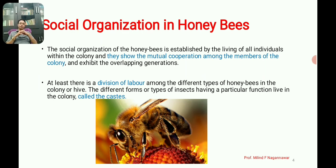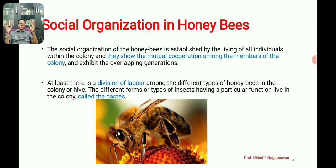In the colony of a honeybee hive, there is a division of labor. All members of the colony are divided into different tasks. There is a group called workers, a group called drones which are meant for reproduction, and one queen who is a fertile female. This division of roles is called division of labor.